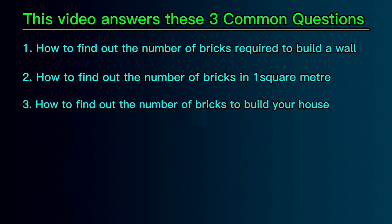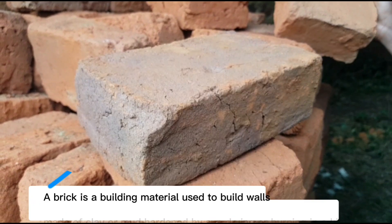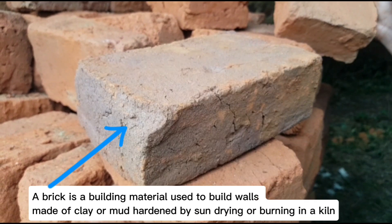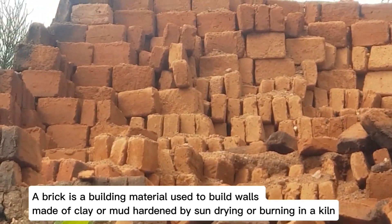Let's first clearly understand what a brick means. A brick is a building material used to build walls, made of clay or mud hardened by sun drying or burning in a kiln. When building a wall we combine these single units together to come up with a complete wall.